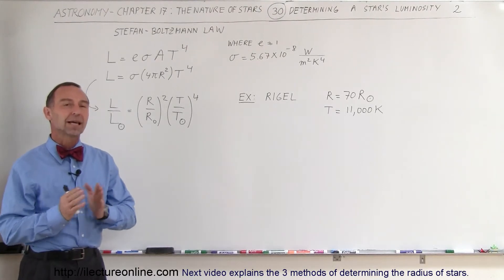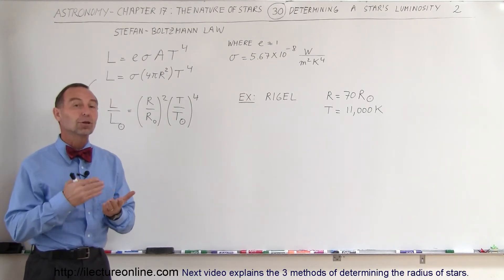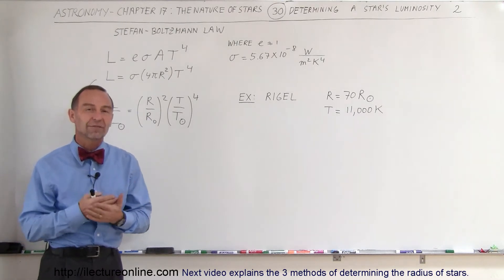Welcome to ElectronLine. Another way in which we can determine the luminosity of a star is using the Stefan-Boltzmann law.